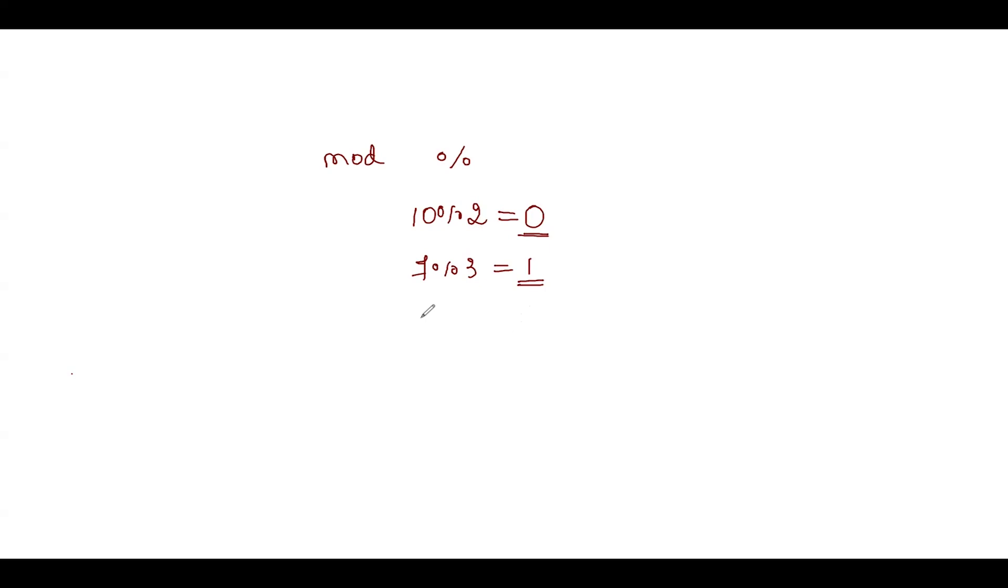Similarly, if I have to give some other example, if I have to say 10 mod 4, 4 divides 10 twice, that is 4 times 2 is 8 and 2 is the remainder. Hence, 2 is the output. As simple as that. So that is the mod operation.